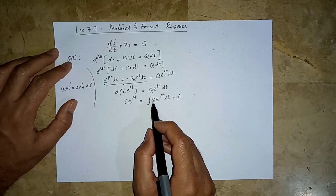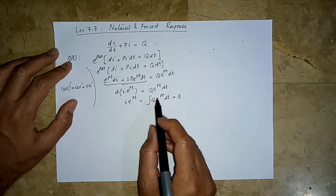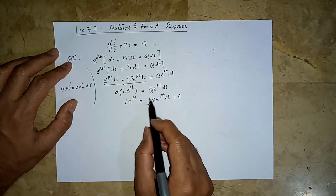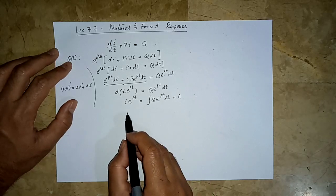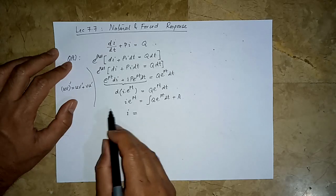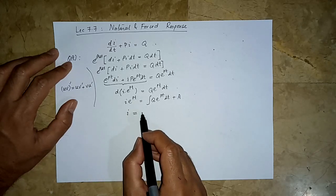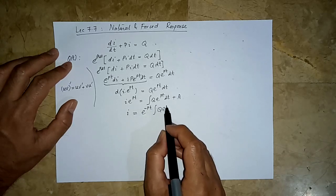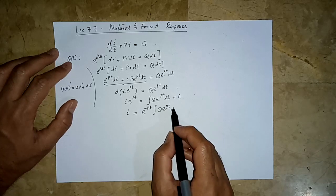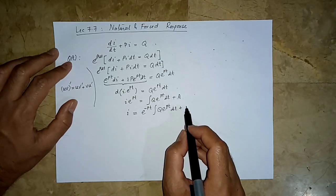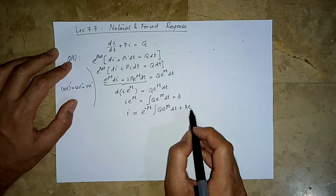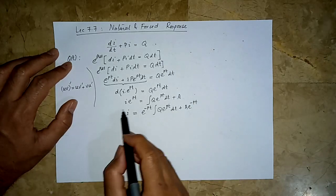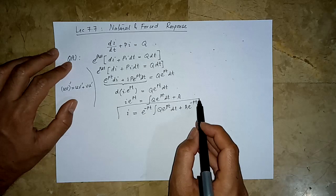So we get: i·e^(pt) equals the integral of q·e^(pt)·dt plus a constant of integration A. If q is a function of time we solve the full integral, but if q is constant we can bring it out. Then i is found by multiplying both sides by e^(-pt), giving: i = e^(-pt) times [integral of q·e^(pt)·dt] plus A·e^(-pt). This is the general mathematical solution for i.